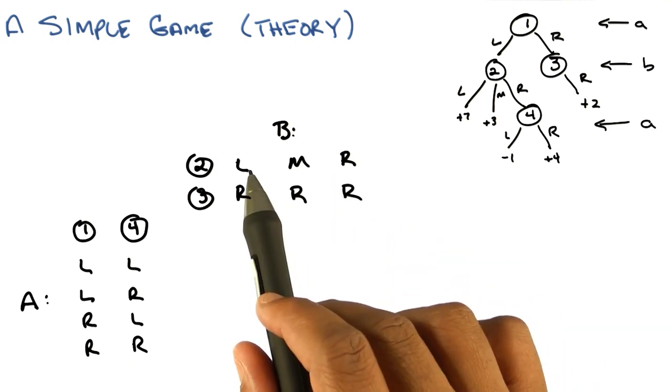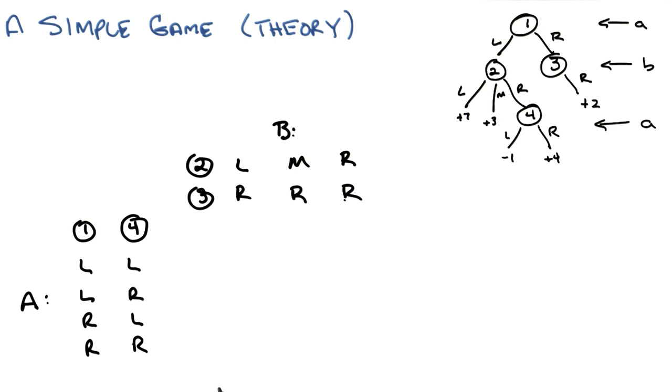And B can go left, right, middle right, or right, right. Right. In particular, three, in state three, B can only go R, which makes B a?